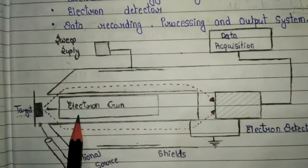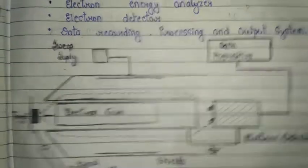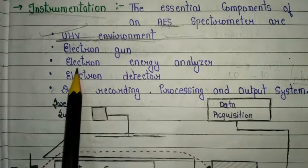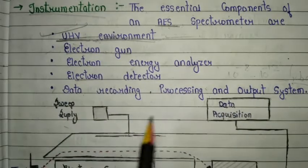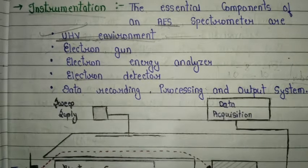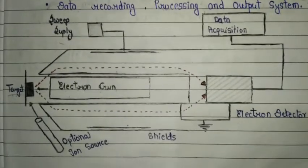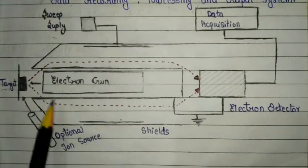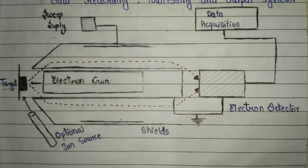The second essential component is the electron gun, which bombards electromagnetic radiation onto the target sample. Third is the electron energy analyzer, followed by the electron detector, and the data recording, processing, and output system. The instrumentation diagram includes a target, electron gun, sweep supply, optical ion source, shield, electron detector, and data acquisition system.